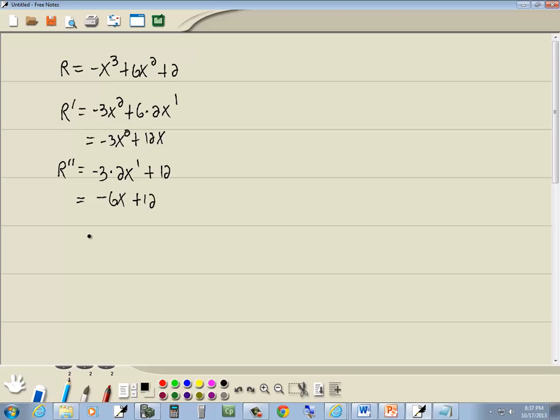We then want to set that equal to 0, so I've got negative 6x plus 12 equal to 0, and solve it. So I'll take negative 6x to the right side, and it becomes a positive 6x. Divide both sides by 6, and we get x is equal to 2, and that's our critical value.